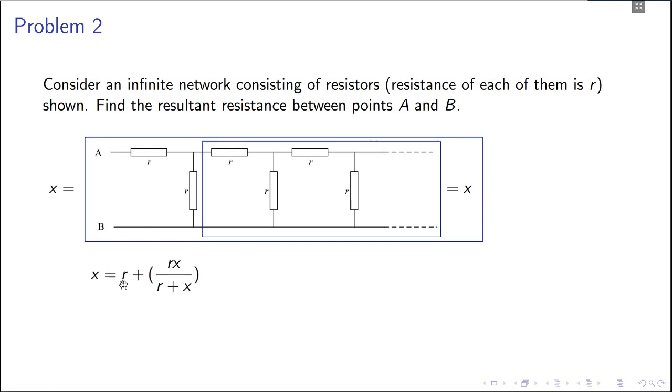So the equivalent of that should be equal to x. So x basically is just r, this one, and r and small x in parallel will be just rx by r plus x. So you get a quadratic and you take its positive root. There was a plus minus sign, it cannot be negative, the resistance, so you just take the positive sign and this is your answer.